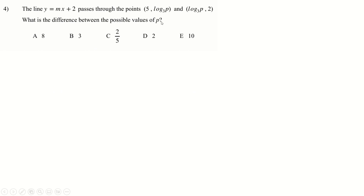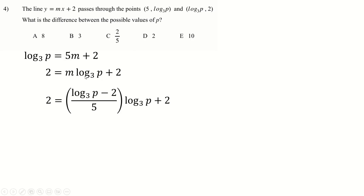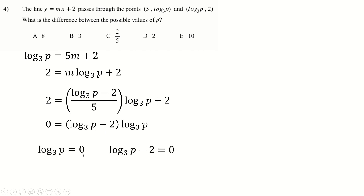Putting the x and y coordinates into the equations gives a simultaneous system. Rearranging for m: m = (log(something) − 2) / 5, then substituting in. The 2s cancel, multiply everything by 5, and you end up with a factored product equal to zero. Either factor gives 3⁰ = p so p = 1, or 3² = p so p = 9. The difference between them is 8.